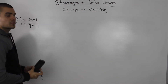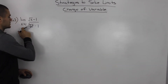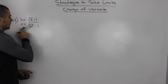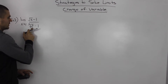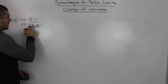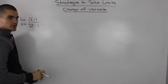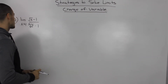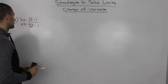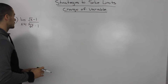So the first thing with limits — what do we always check? Can we make a direct substitution? So if we sub in 1 into the denominator, we'll get 1 squared is 1, and then the third root of 1 is just 1 as well, so 1 minus 1 is 0. And that will be undefined, so we can't make a direct substitution unfortunately.